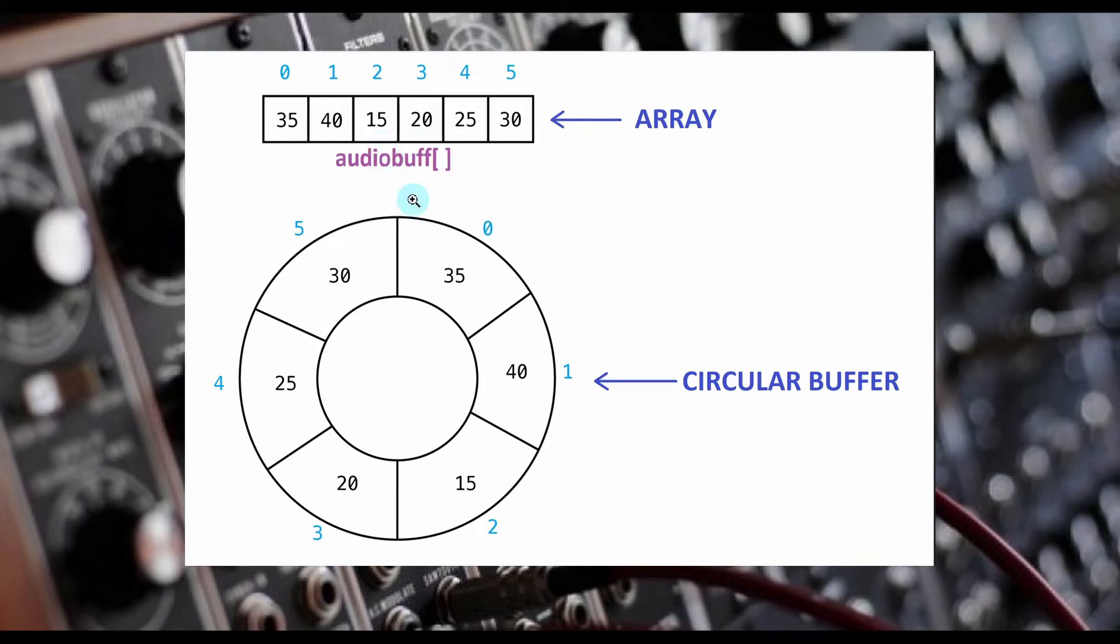A circular buffer is like a tape loop. It will start at the beginning, and when it reaches the end, it will start at the beginning again. The circular buffer is very handy for streaming audio data.